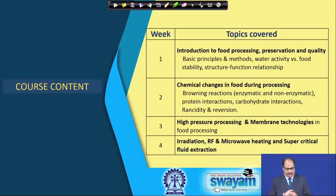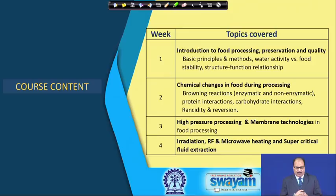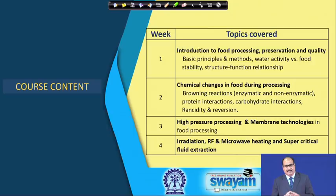In the second week, we will discuss about the changes that occur during processing of food. It may involve browning reactions, both enzymatic and non-enzymatic. It may include protein interactions, carbohydrate interactions, rancidity and reversions, and so on. After giving a brief overview of the science aspects of food, we will switch over to the processing technologies.